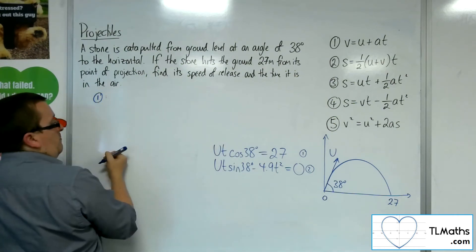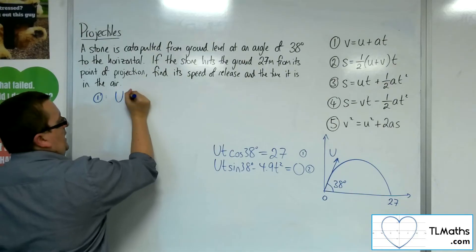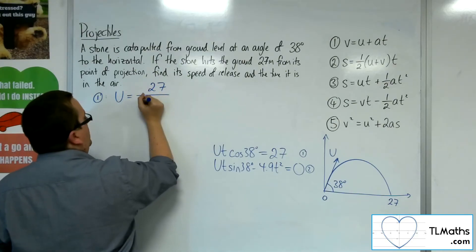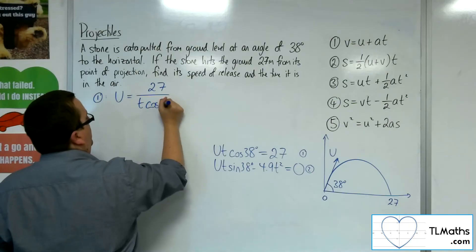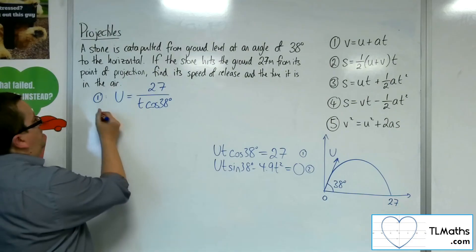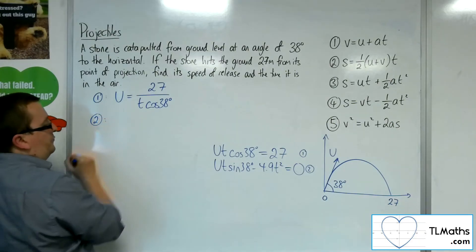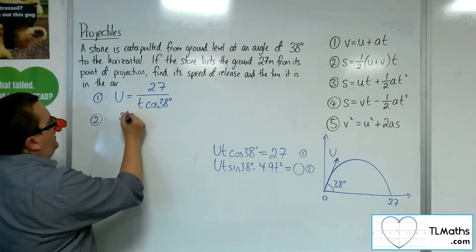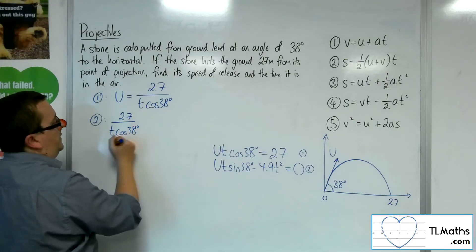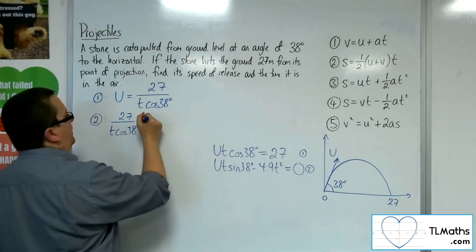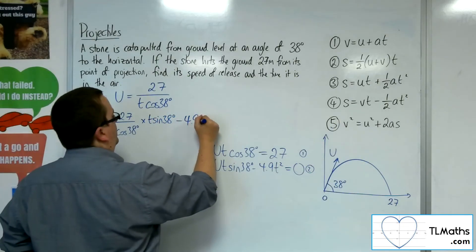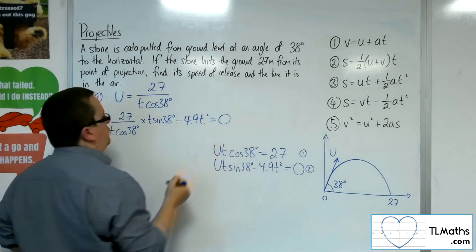So if I rearrange number 1 to get u equals, I'm going to get 27 over t cosine 38. I'm now going to substitute that into equation number 2. So I've got the 27 over t cosine 38 times the t sine 38. Take away the 4.9t squared is equal to 0.